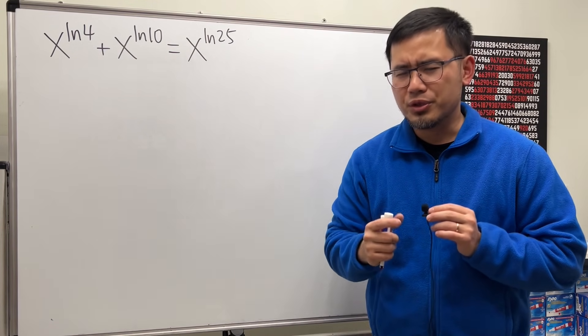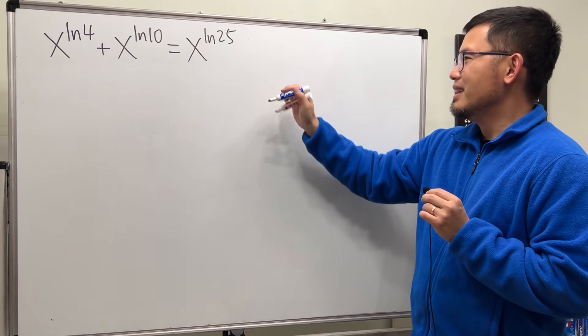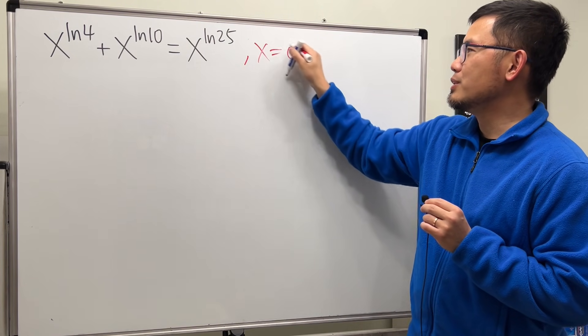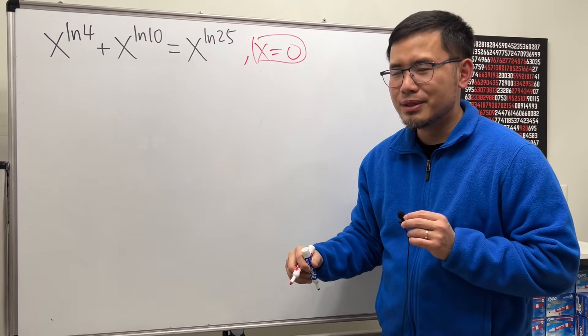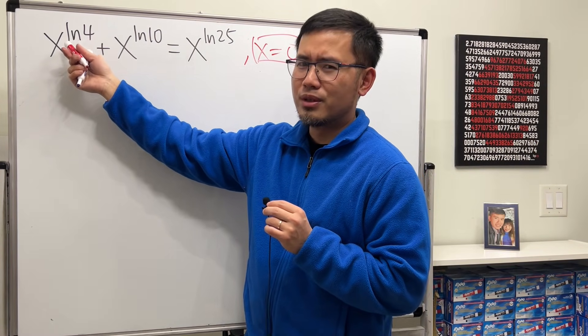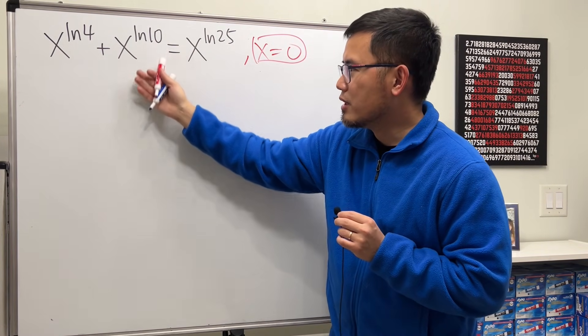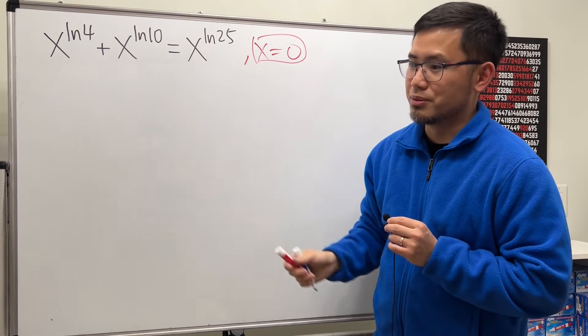And I know you guys know the answer is just x equal to 0, right? Because 0 to the ln4's power is 0. Likewise, we get 0 here. 0 plus 0, we get 0. Done.